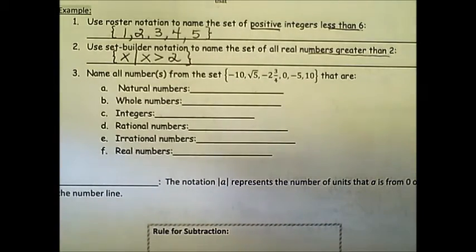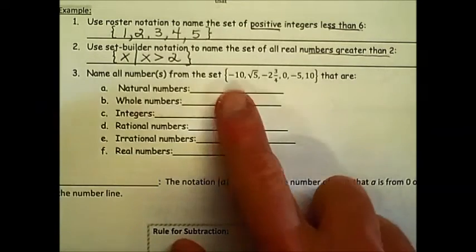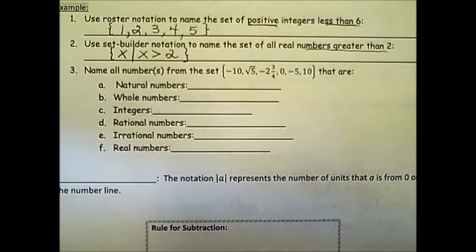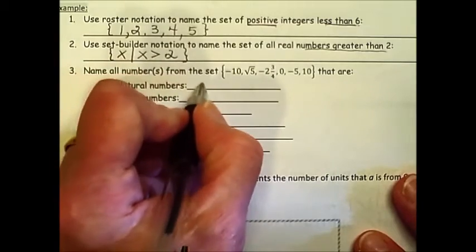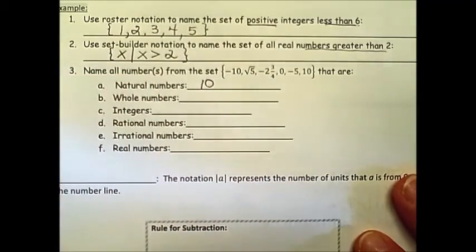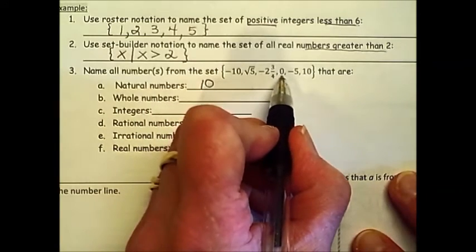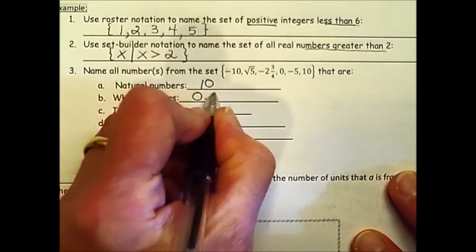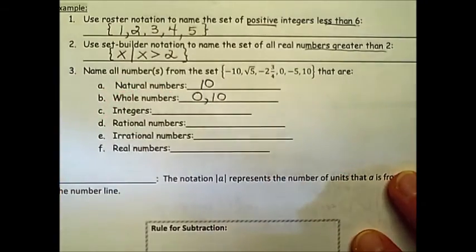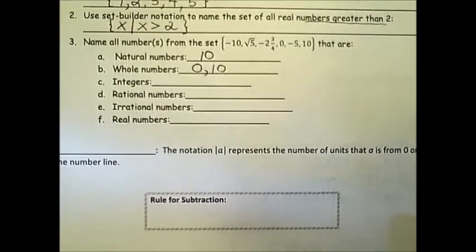In the last example here, number 3 asks us to name all the numbers from this set. And here in roster, they have all the numbers that we're to take under consideration that are natural numbers. Think about the first numbers that you were introduced to, and the only number listed there that qualifies as a natural number is 10. Whole numbers, the only difference between natural and whole numbers is 0, and that is one of our choices. So 0 and 10 would fall under the category of whole numbers.